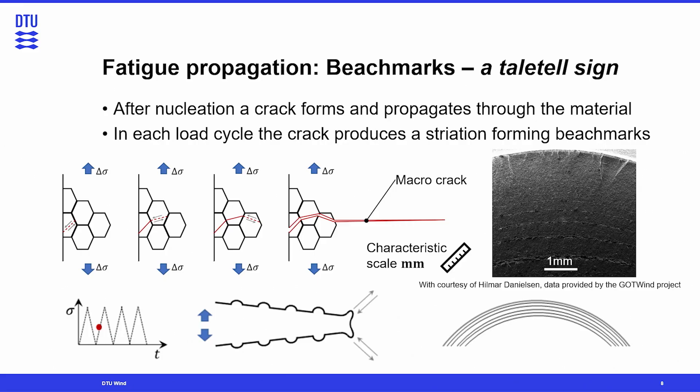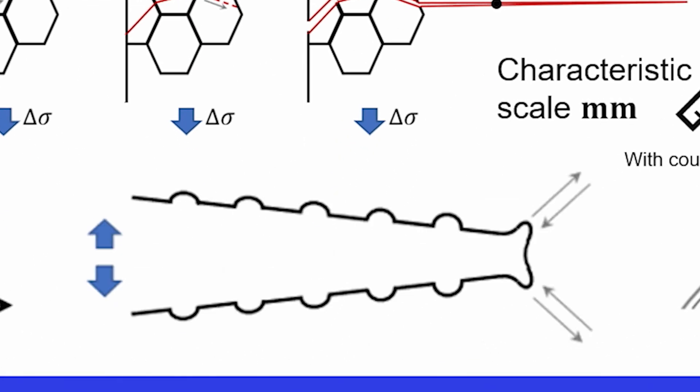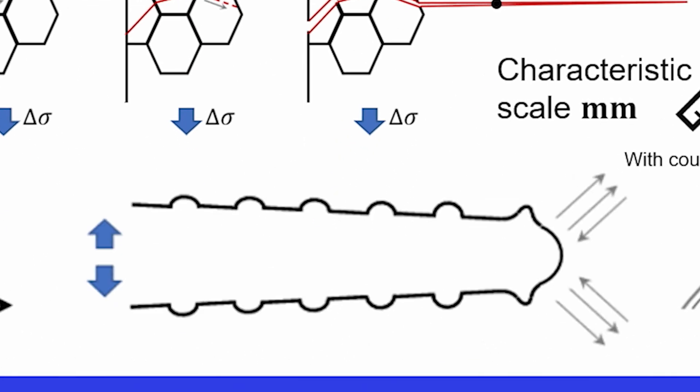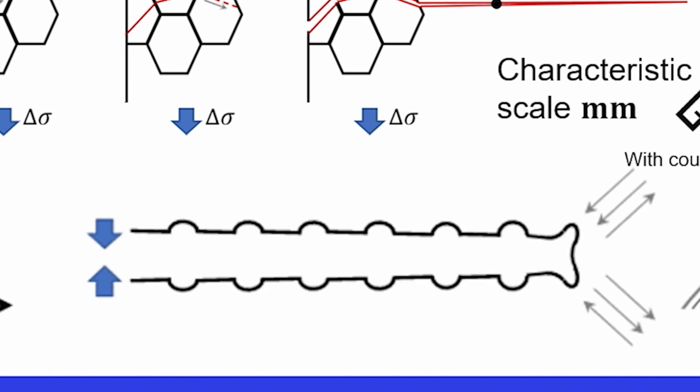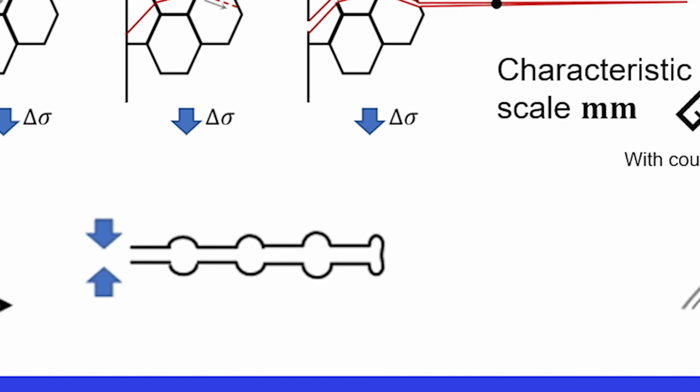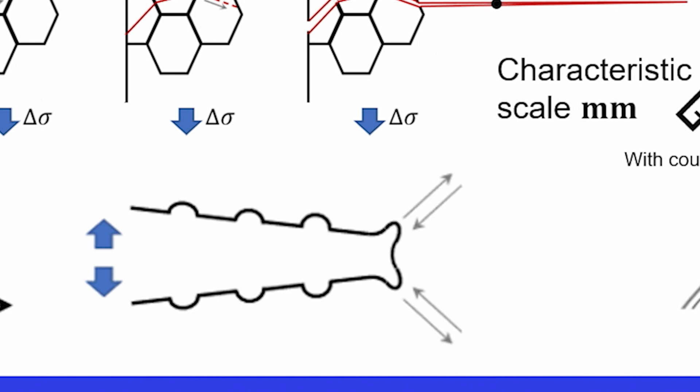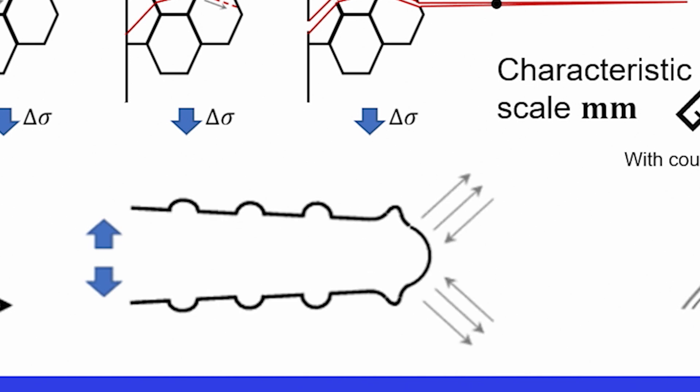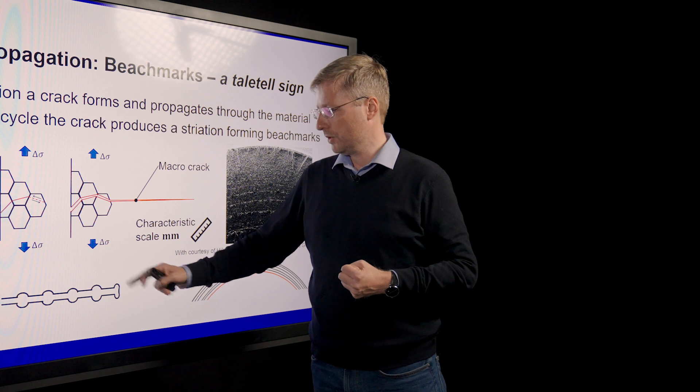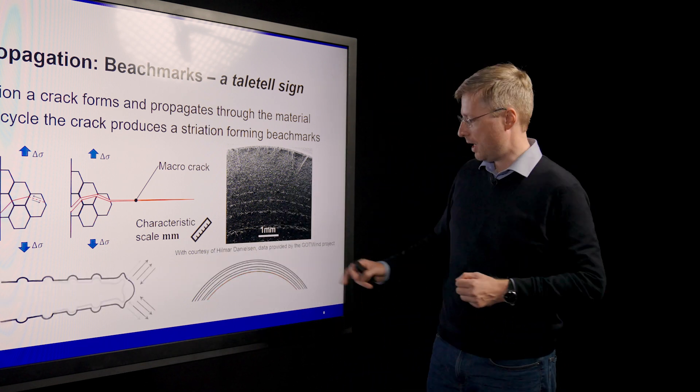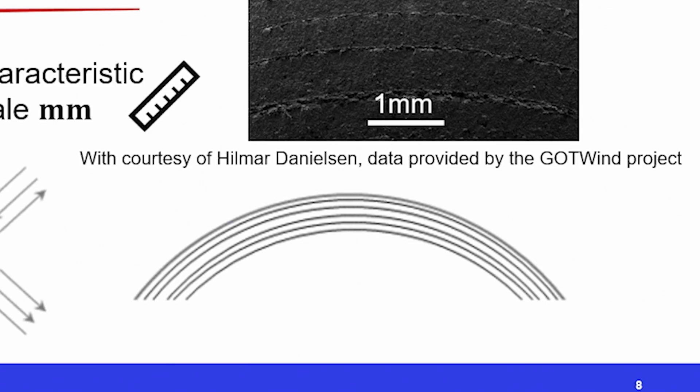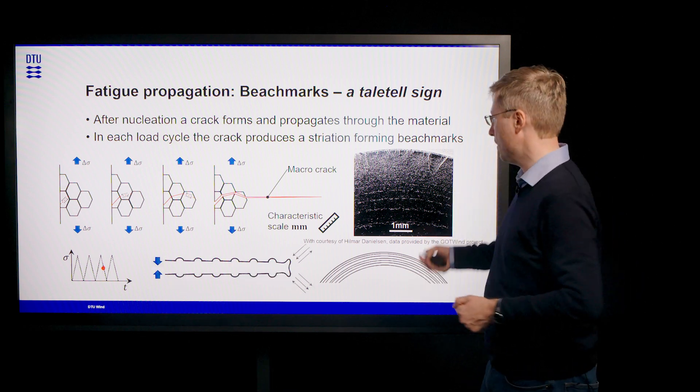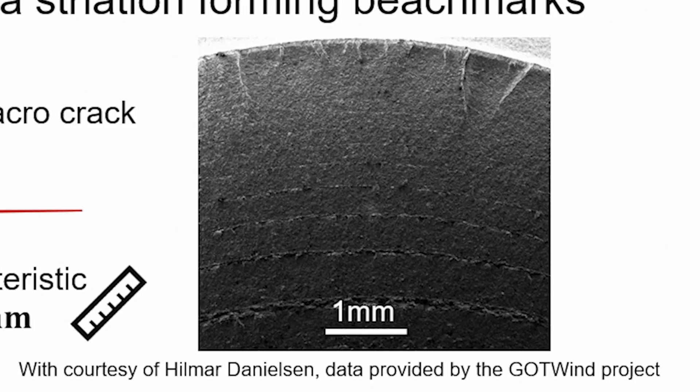Once we have a macro crack in a material, then we see here in this animation that after every load cycle of that macro crack, we create a lot of plastic deformation ahead of the crack in the crack tip because the stresses and strains are very high there. And so after every load cycle, this crack leaves behind a specific mark on the surface which we call striation. If we take many striations together, we are forming beach marks which are shown on this fractograph.